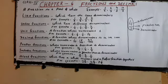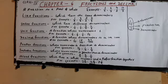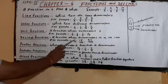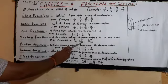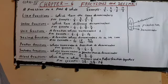Fourth, decimal fractions. What is a decimal fraction? A fraction whose denominator is 10, 100, or 1000. For example, 1 by 10, 15 by 100, 37 by 1000. So, a fraction whose denominator is 10, 100, or 1000 is called a decimal fraction.